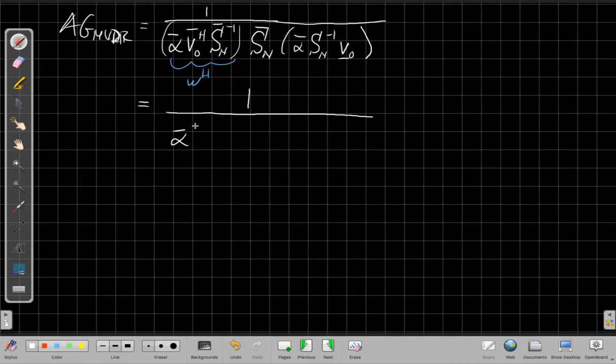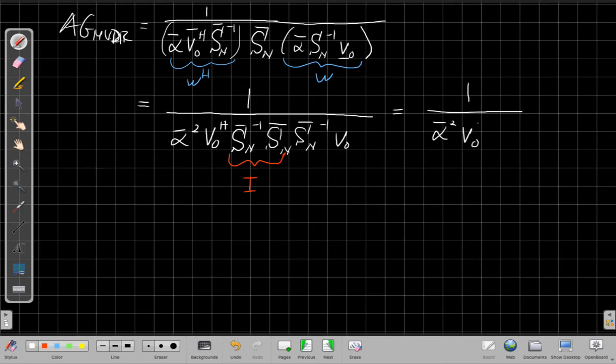Just 1 over, pull the alpha bar squareds out front. I can then look, oh, I should have labeled this, so this was, this term here was my W. And when I look at this, well, let me just write it all out and not cancel too much too fast. V naught Hermitian, SN bar inverse SN bar times another SN bar inverse V naught. So when this all settles, we can look at it and say, I could take these two, multiply them together, matrix by its inverse just leaves me I, and so that simplifies what's left to be 1 over alpha bar squared V naught Hermitian SN bar inverse. That's this term here surviving times V naught.